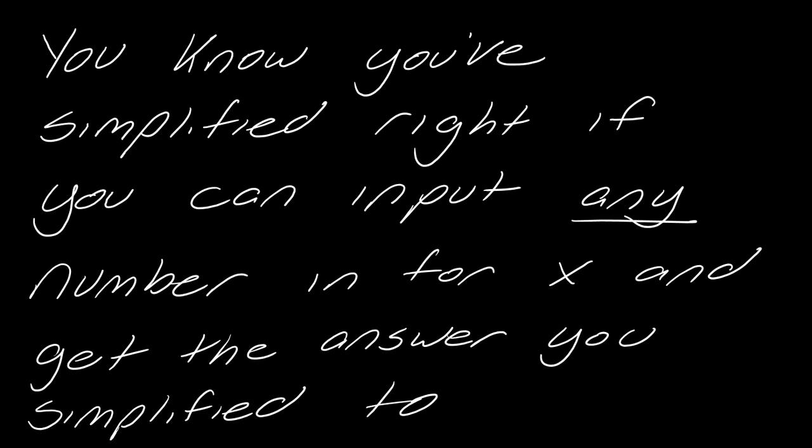So just a review, you know you've simplified right if you can input any number in for x and get the answer that you simplified to. So I should be able to put in 10 different numbers and still get the right answer. And since I just figured out zero does not give me that equivalent answer, we've got some issues.